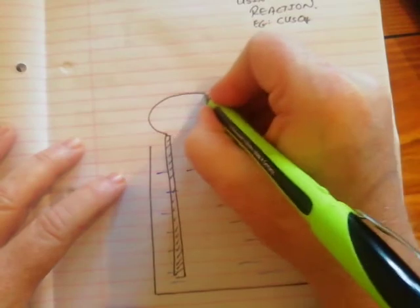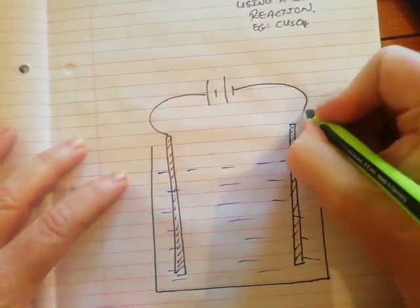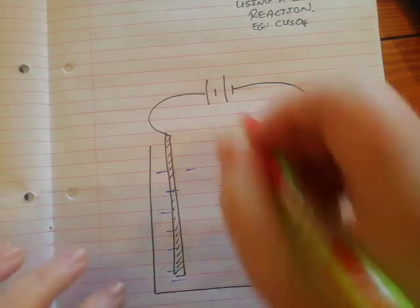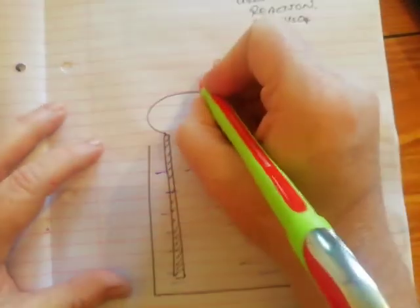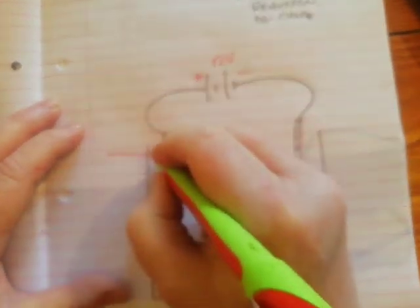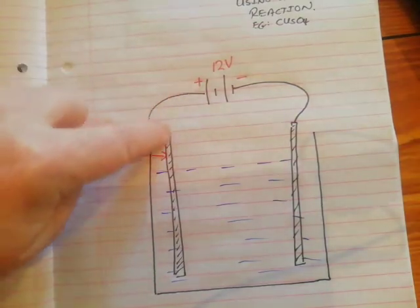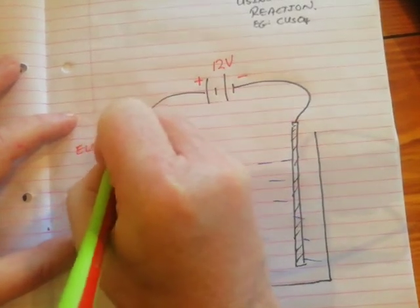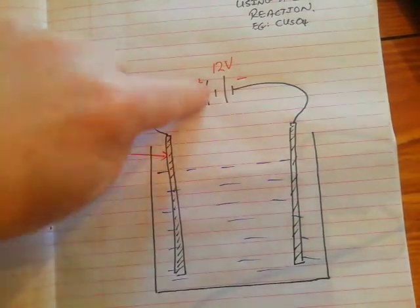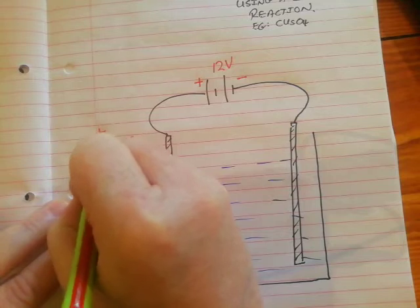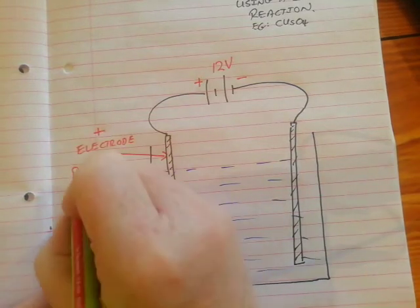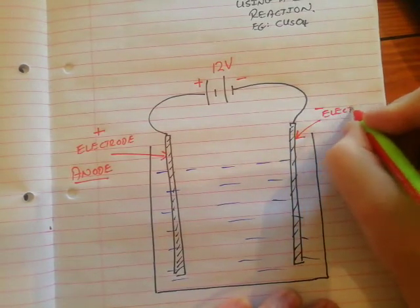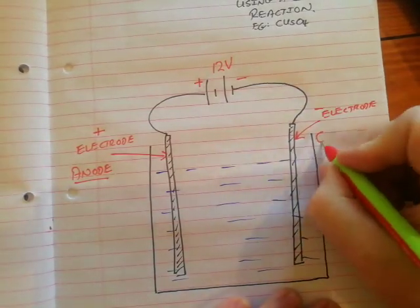We're going to connect the electrodes up to a battery — the source of voltage which pushes an electric current through the electrolyte. This is the plus of the battery, this is the minus. The metal plate connected to the plus of the battery is called the positive electrode — it's given another name: the anode. This electrode over here is the negative, connected to the minus of the battery, and its special name is the cathode.